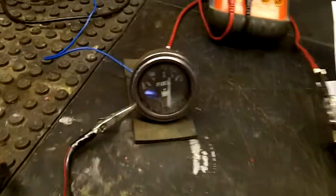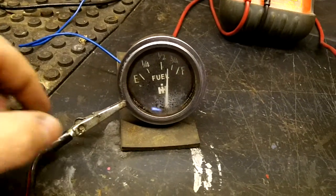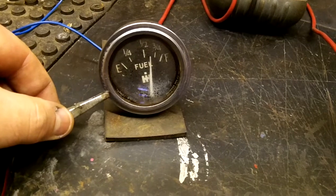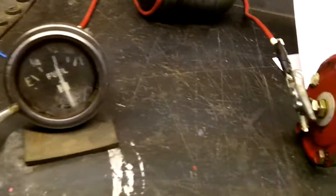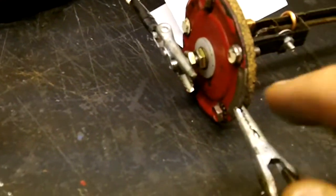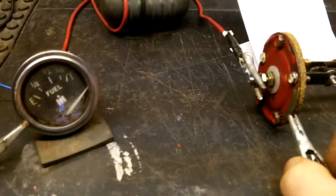As you can see, the gauge here is grounded. If you lose your ground on the gauge, it goes to empty. If you lose the ground on the sending unit - I'm just going to pull this off - it goes to full.